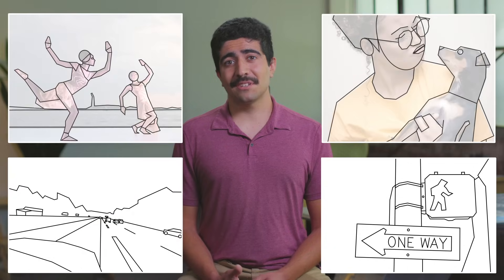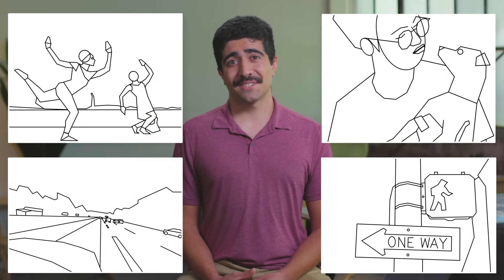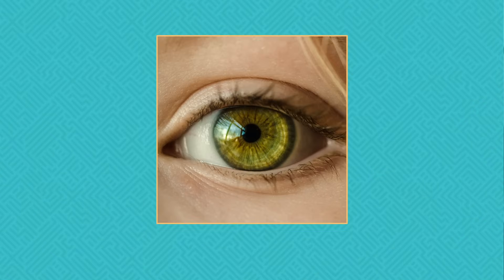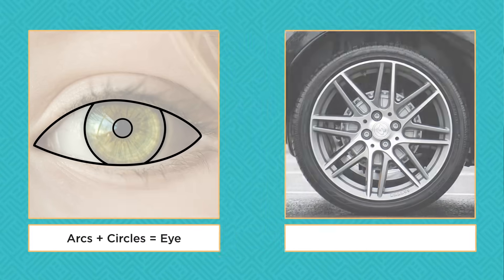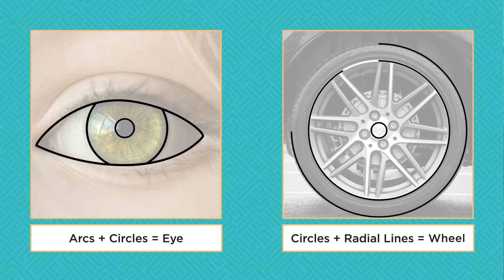Most complex images can be broken down into small, simple patterns. For example, an eye is made up of two arcs and some circles inside. A wheel is made up of concentric circles and some radial lines.